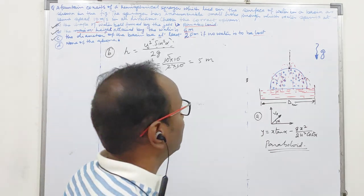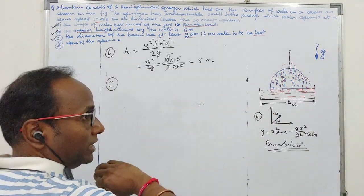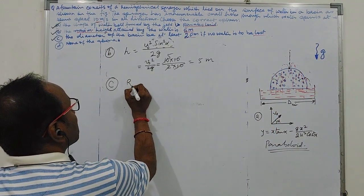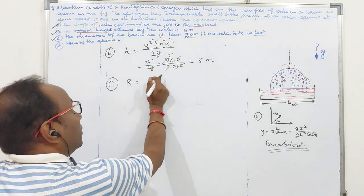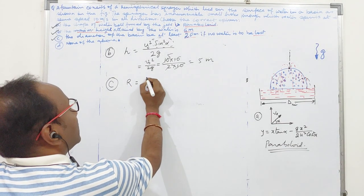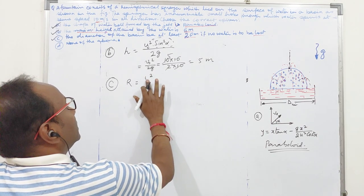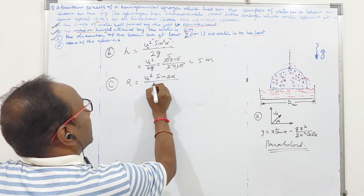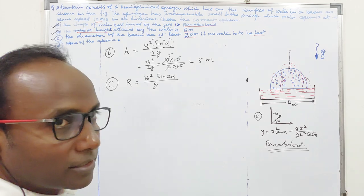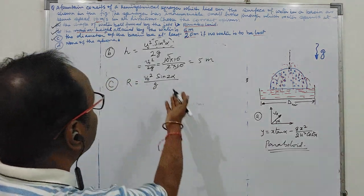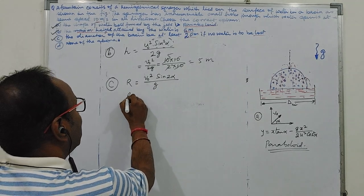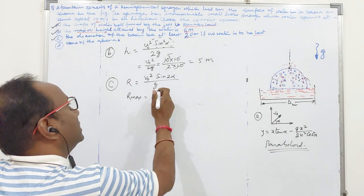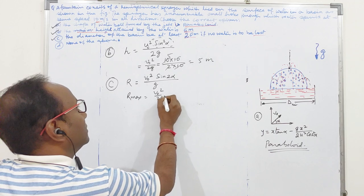So what happens when you know that range of water coming out of the hole can be. So when will it be maximum? Range maximum will be when alpha is 45 degree and sine 2 alpha is 90 degrees. So maximum is v naught square over 2g.